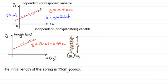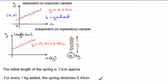So the initial length of the spring is approximately 13 centimeters. Now for the 0.49: being the gradient, it means for every one unit increase horizontally we rise 0.49 units. In context, for every one kilogram added, we expect the length to increase by 0.49 centimeters — approximately 0.5 of a centimeter. So: for every one kilogram added, the spring stretches approximately 0.49 centimeters.